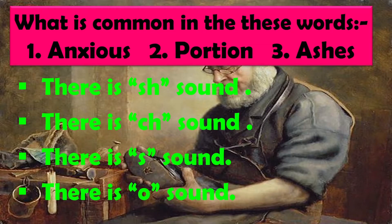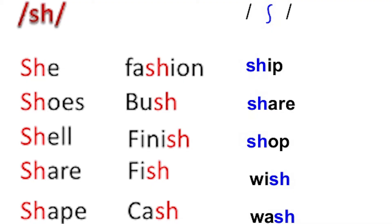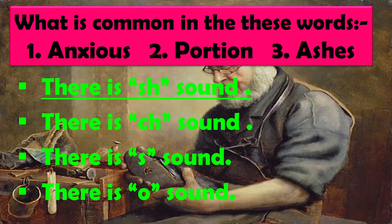What is common in these words: 'anxious', 'portion', and 'SS'? Neeche diye gaye shabdon mein kaun si baat same hai? Options: There is SH sound, there is CH sound, there is O sound. The right answer is there is SH sound. Anxious mein SH sound hai, portion mein T-I se SH banaya hai, SS mein S-H se SH banaya hai — to English mein teen different spellings se SH ki awaaz aa rahi hai.